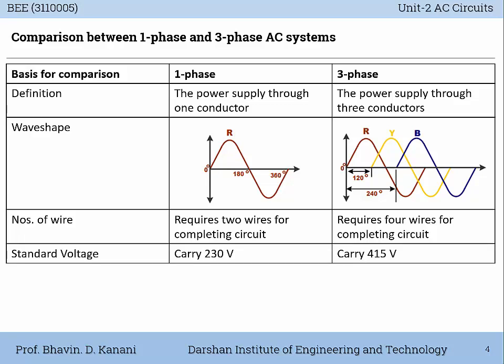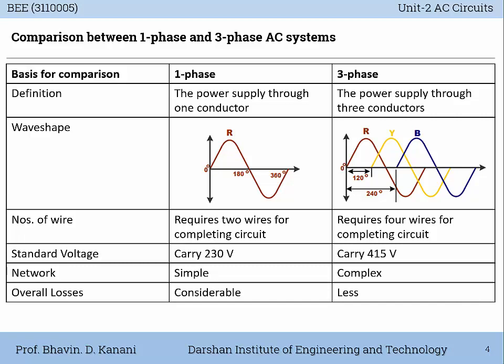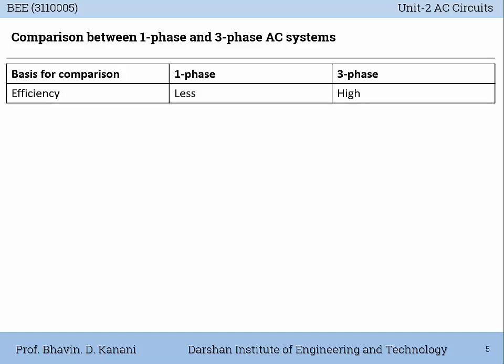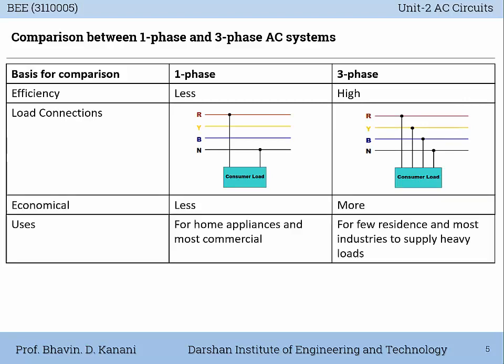Single-phase supply carries 230 volts as a standard difference in India, and for a three-phase system it is 415 volts. Single-phase network is simple but a three-phase network is comparatively complex. The overall losses in a single-phase system are considerable, whereas in three-phase they are less. Efficiency of single-phase system is less as compared to the three-phase system. Single-phase system is less economical than the three-phase system.